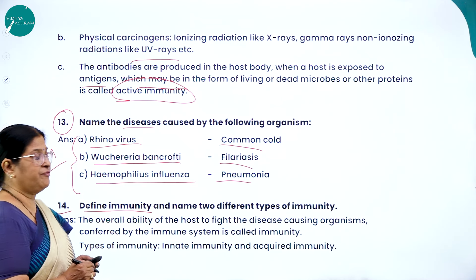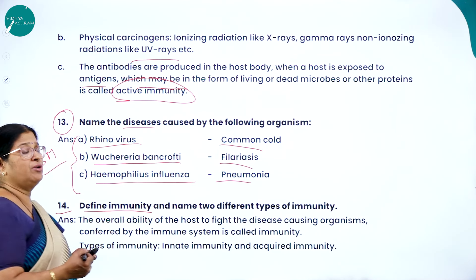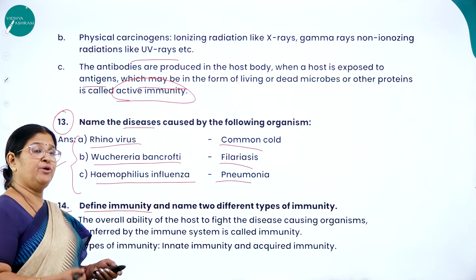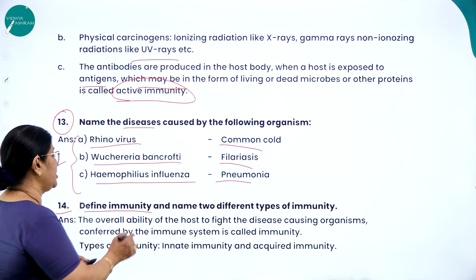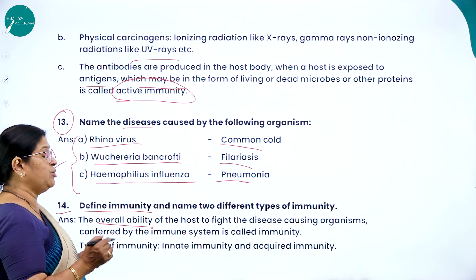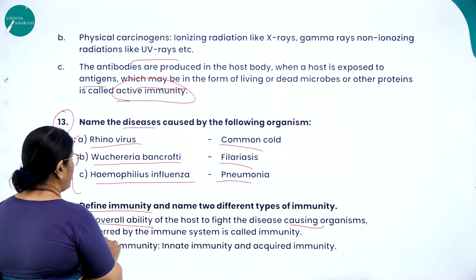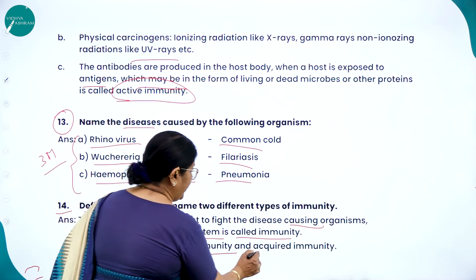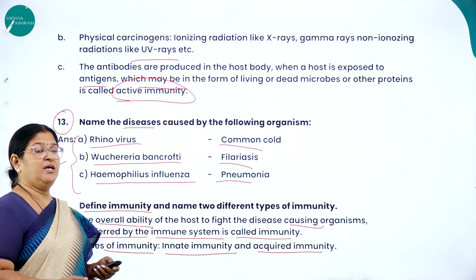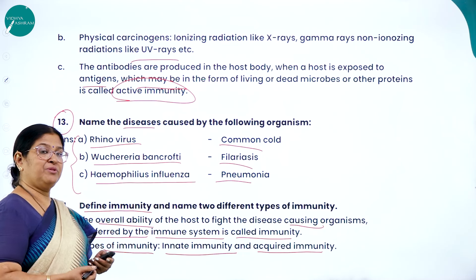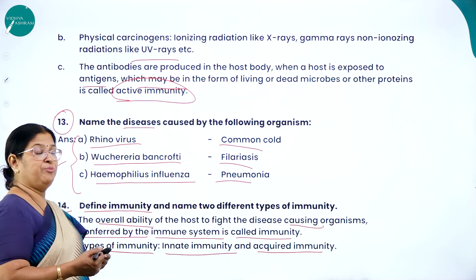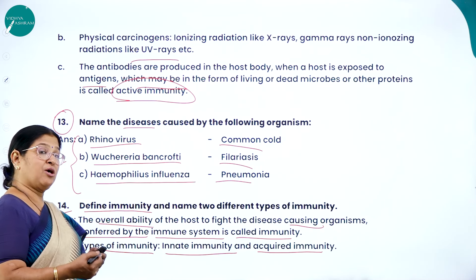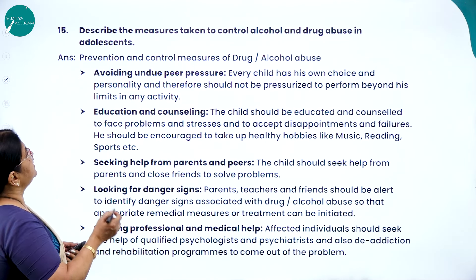Define immunity and name two different types. Immunity is the overall ability of the host to fight disease-causing organisms, conferred by the immune system. The two types are innate immunity and acquired immunity. Innate immunity is present right from birth — the antibody we get from mother's milk is one early form. Acquired immunity develops during our lifetime through vaccinations and exposure to pathogens.